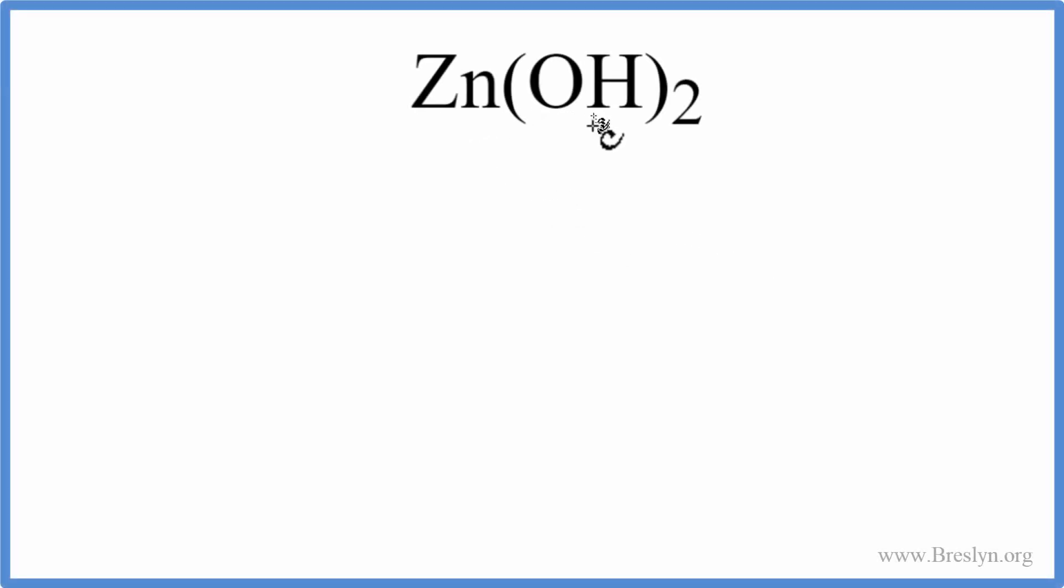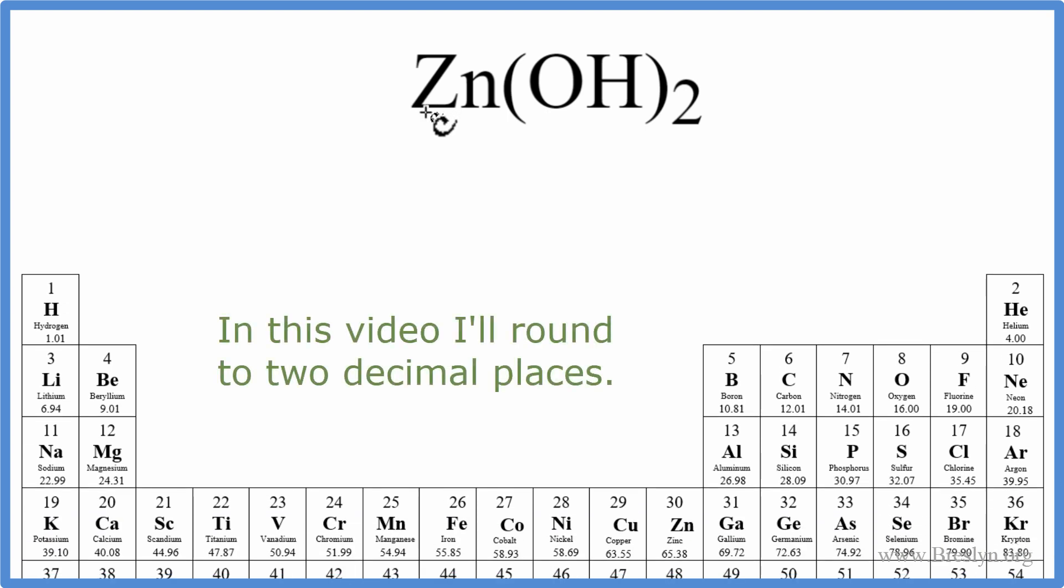Define the molar mass for zinc hydroxide. We'll go to the periodic table and we'll look up zinc. Zinc on the periodic table is 65.38 grams per mole.